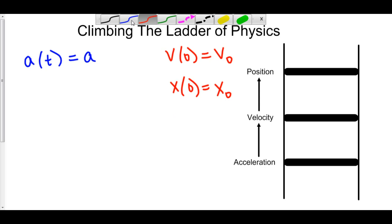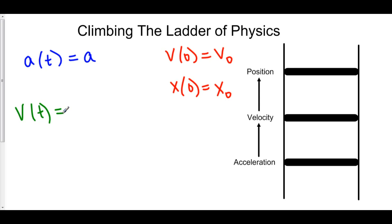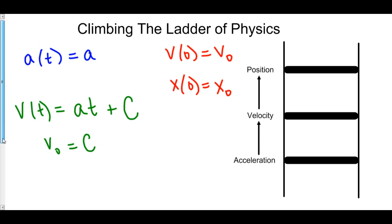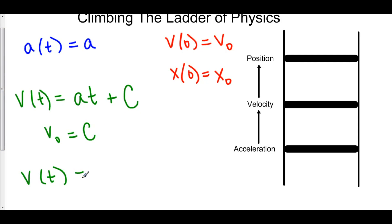The antiderivative of acceleration gives us velocity. So our velocity is equal to the antiderivative of a with respect to t — that's just at plus C. Because when we take an antiderivative, we have to include the plus C. Now let's solve for C using our initial value of velocity. We'll plug v-naught into v(t) and plug zero into t. a times zero is zero, plus C gives us C. So C is v-naught, and this gives us our velocity function: at plus v-naught.